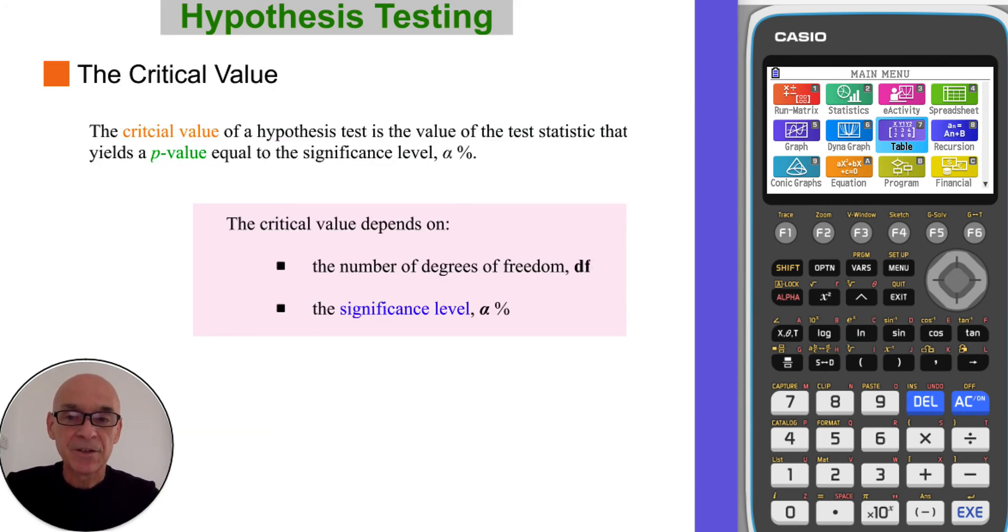And the critical value. Again, this is the value that we use to determine whether to accept or reject the null hypothesis. And that value, the critical value, depends on the significance level and the number of degrees of freedom.